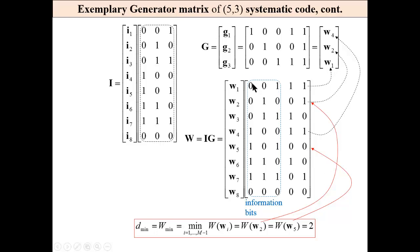These are the information bits, and these are the parity check bits. The minimum distance of this code is the minimum weight of the codewords, which is 2 — for W2 = 2 and also for W5 = 2 — meaning the minimum distance of this code is 2. This code enables detection of single errors, and that's it.